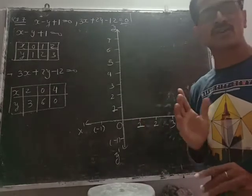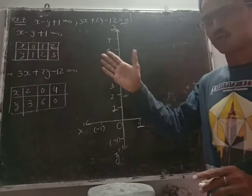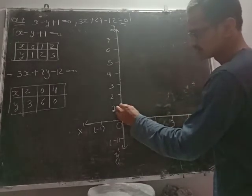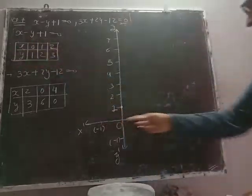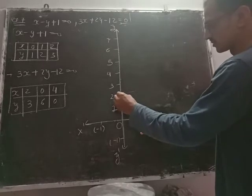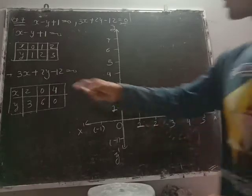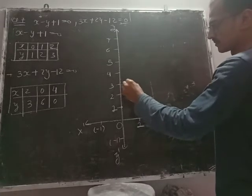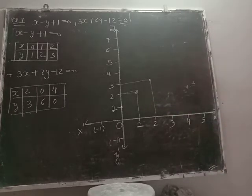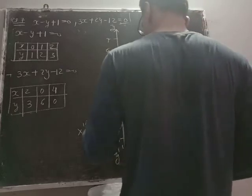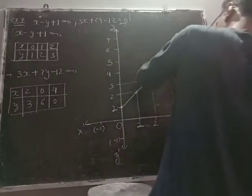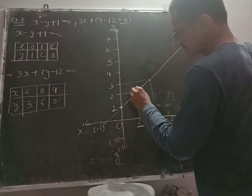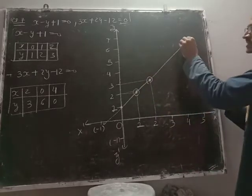For x minus y plus 1 equals 0, the coordinates are: x is 0, y is 1, so mark this point on the y-axis. x is 1, y is 2, so this is on the x-axis 1 and y-axis 2, mark the point. x is 2, y is 3, so x-axis is 2, y-axis is 3. Now we draw a straight line passing through all these three points.